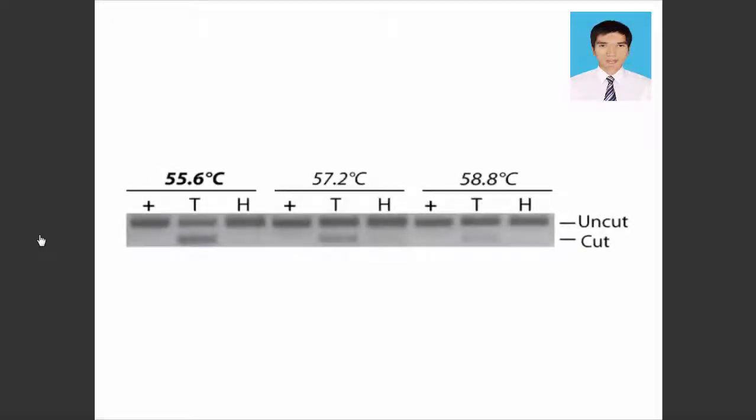This figure shows an agarose gel with a temperature gradient PCR amplification profile from a mixture of 50% methylated and unmethylated DNA. The PCR amplicons in lanes marked with T, lanes 2, 5, and 8, have been treated with a restriction enzyme that will digest only methylated DNA.